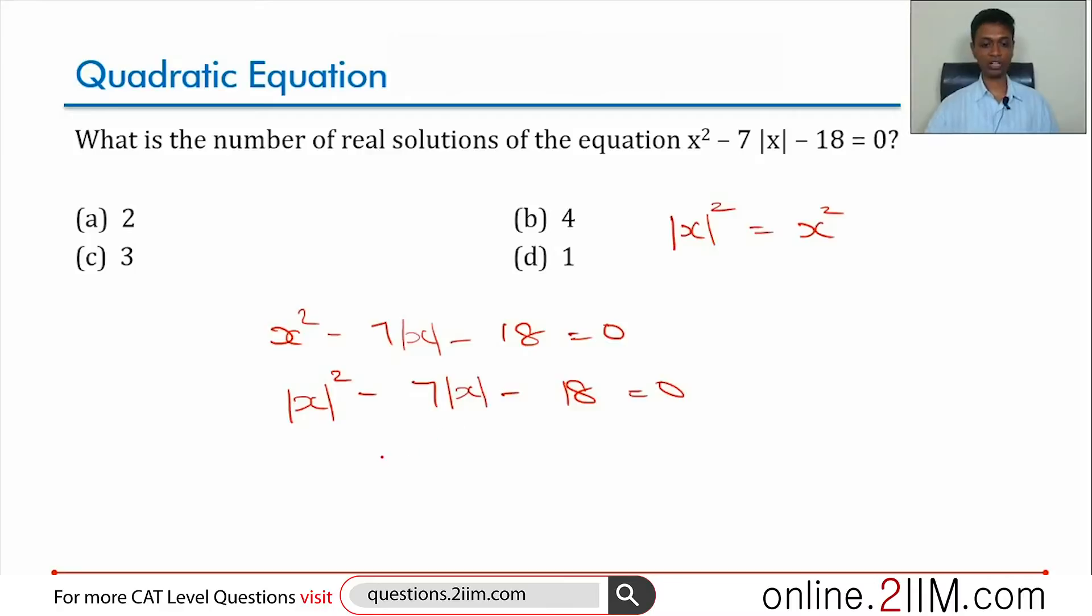We factorize this and get mod x minus 9 into mod x plus 2 equal to 0.